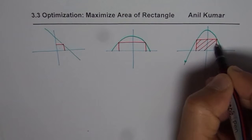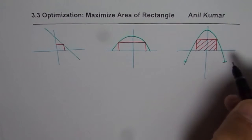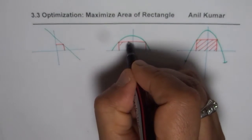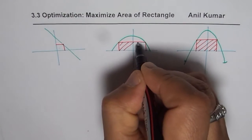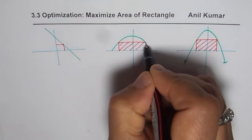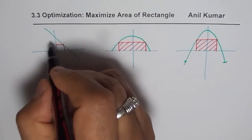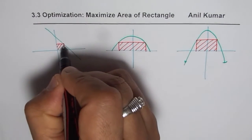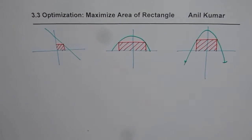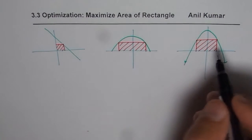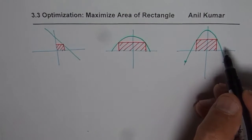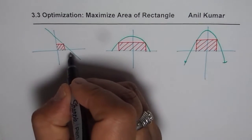We have many videos related to this. In this video, however, we'll only try to understand the strategy. So let me take the case with the straight line and discuss that at length. Then we can take the next video on how to do this when we have different types of curves — a circle and a parabola. So let's begin with the straight line.